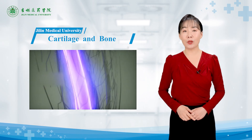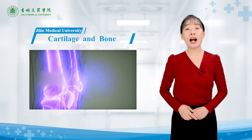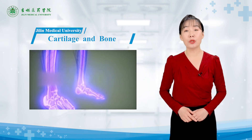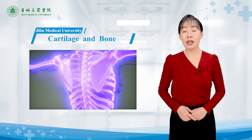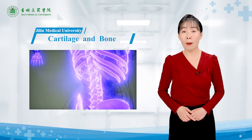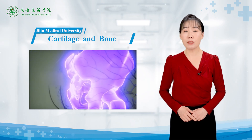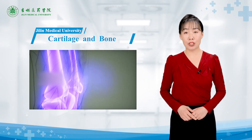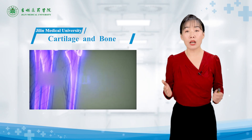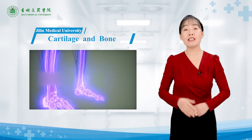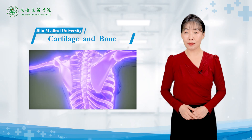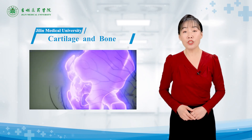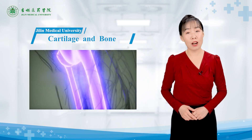Cartilage and bone are mainly composed of cartilage tissue and bone tissue (osseous tissue) respectively. Both cartilage tissue and bone tissue are specialized connective tissue. Like all connective tissue, they are composed of cells, fibers, and ground substance. As skeletal tissues, they have supportive and protective functions.